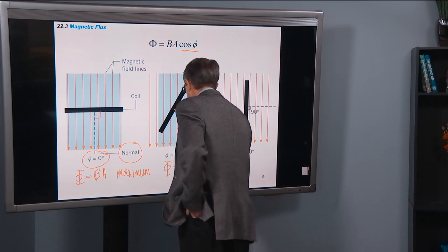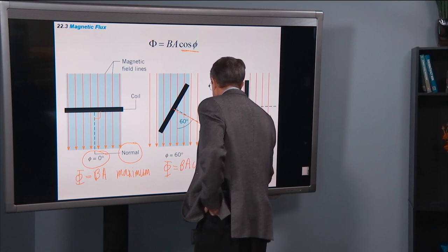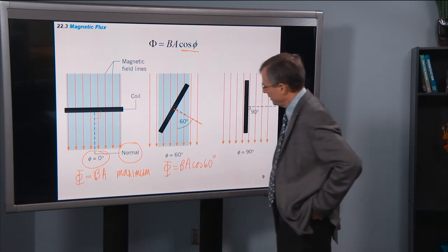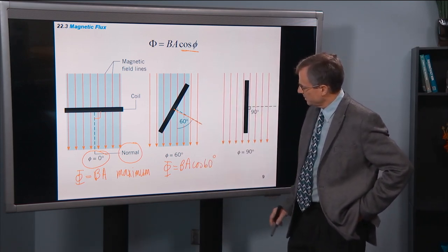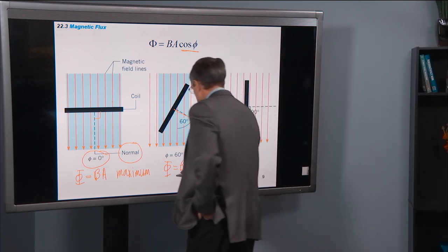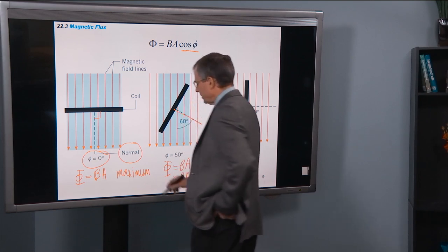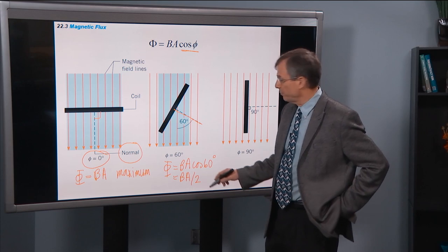Φ is B, A, cosine 60 degrees. Well, cosine of 60 is the same as sine of 30, it's a half, so we get B, A over 2. So that's kind of a halfway point.